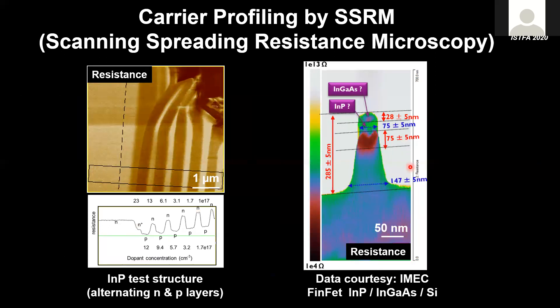A similar application — applying a voltage to the sample and measuring conductivity or resistance — is called scanning spreading resistance microscopy (SSRM). If we do that measurement on a semiconductor, the resistance we're measuring is dominated by what is called the spreading resistance. That spreading resistance nicely relates to the carrier concentration in the sample through a well-defined formula.